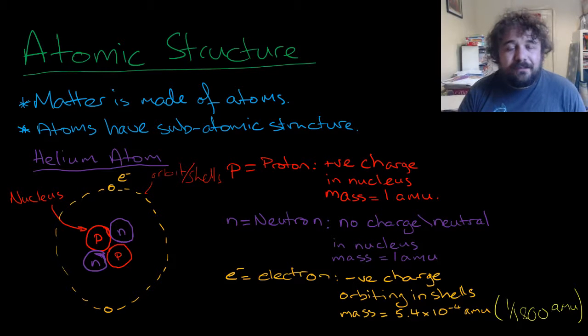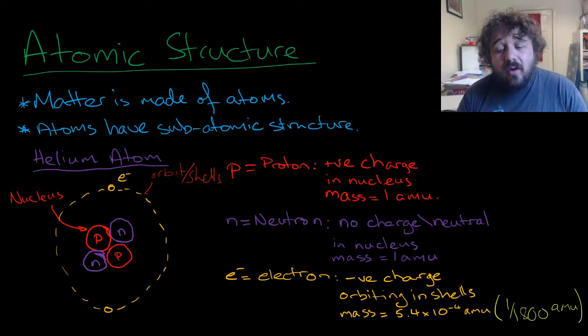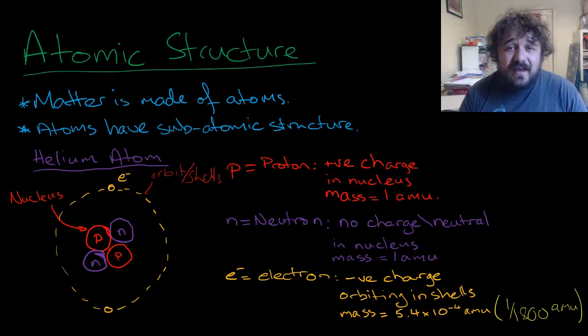Then we have the electron. Now, the electron itself has a negative charge, it orbits in the shells, but the main difference, the really crazy difference, is how small it is. It is 1/1800th the size of a proton, or 5.4 times 10 to the minus 4 atomic mass units.